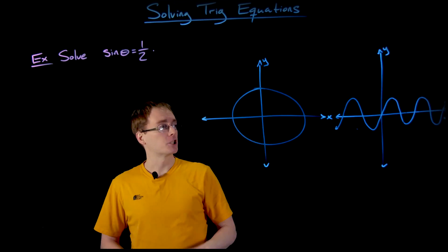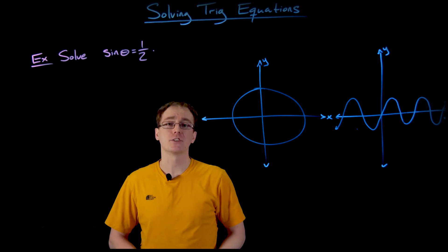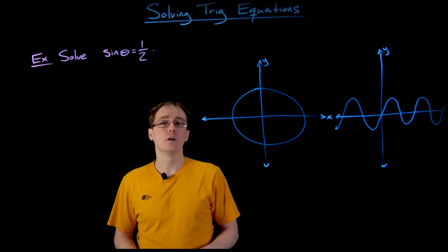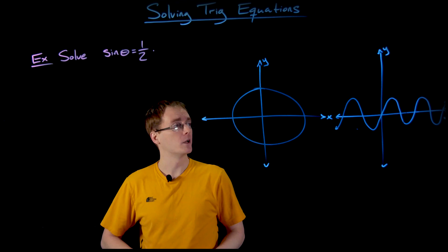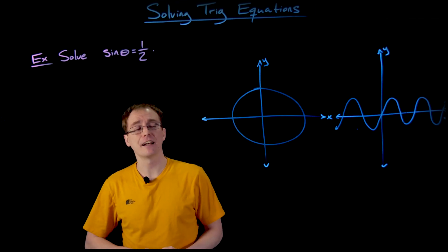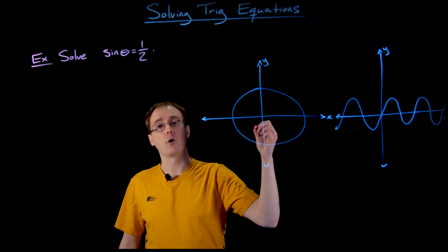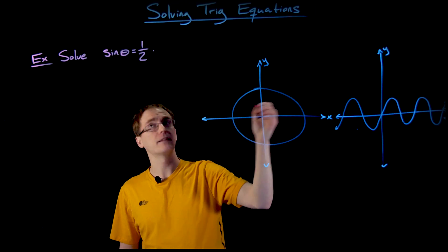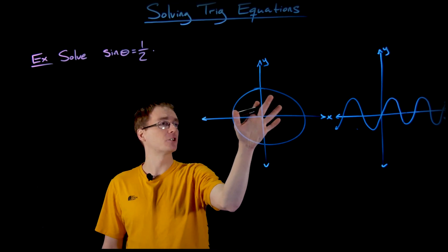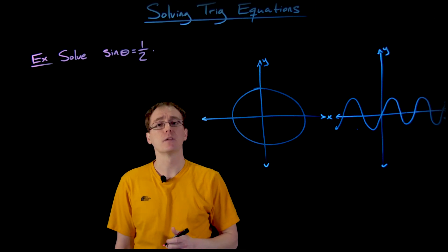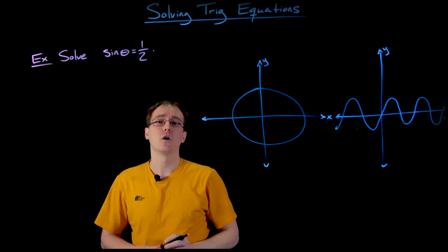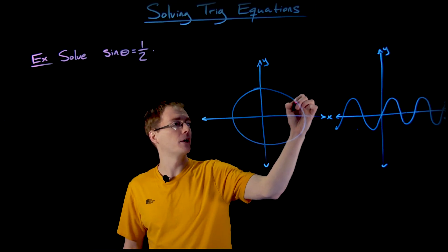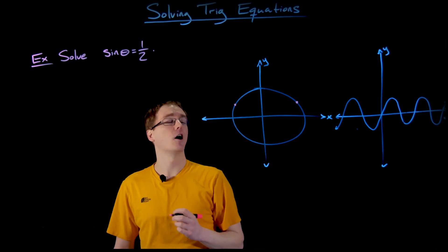On the board I have a rough sketch of our unit circle and a sketch of a couple periods of our sine function. When we're trying to solve this equation — when is sine of theta equal to one half — we can interpret this in a couple different ways. On the unit circle our sine function is equivalent to some point's y coordinate. So we're thinking about where are all the angles or arc lengths on the unit circle such that they land us at a terminal point that has a y coordinate of one half.